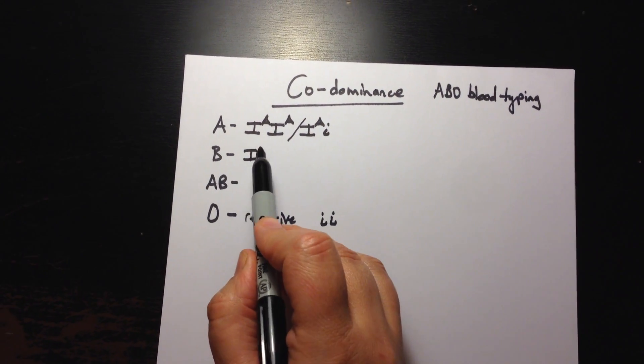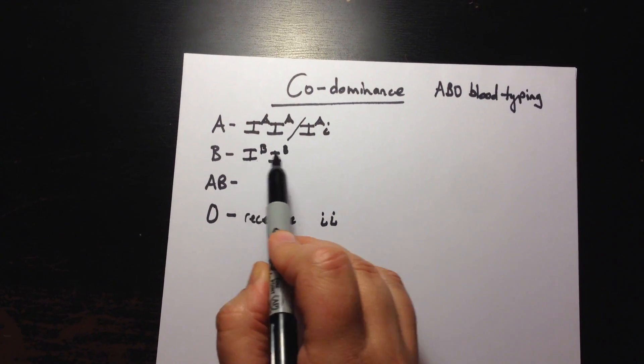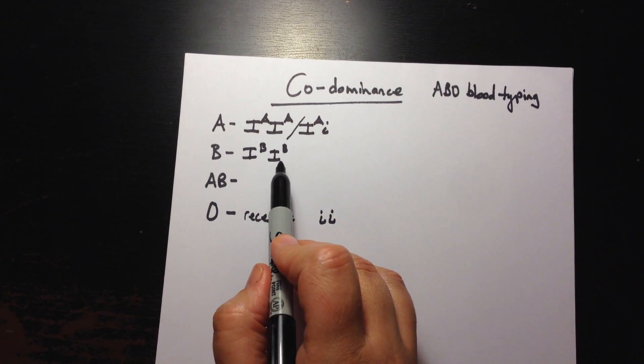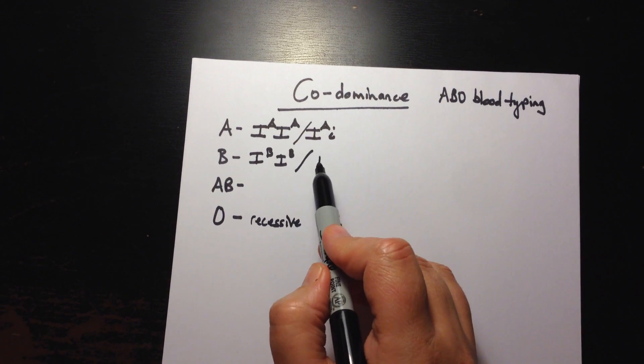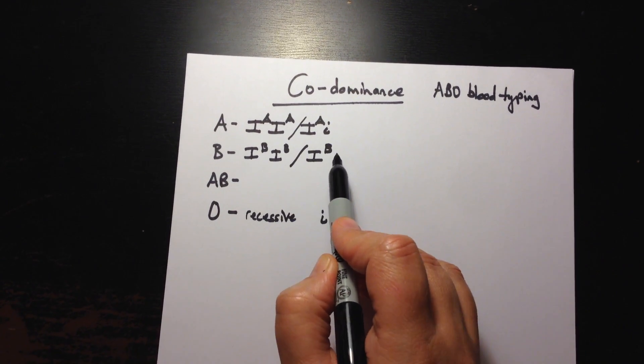The same thing happens with type B blood. You have two dominant alleles together in the homozygous dominant condition or you could have the heterozygous condition.